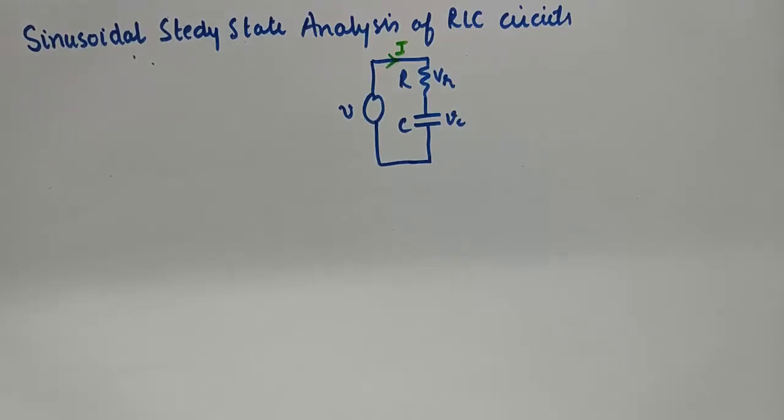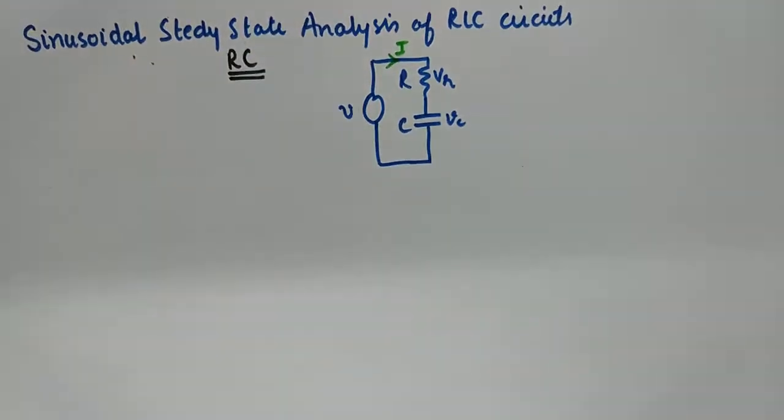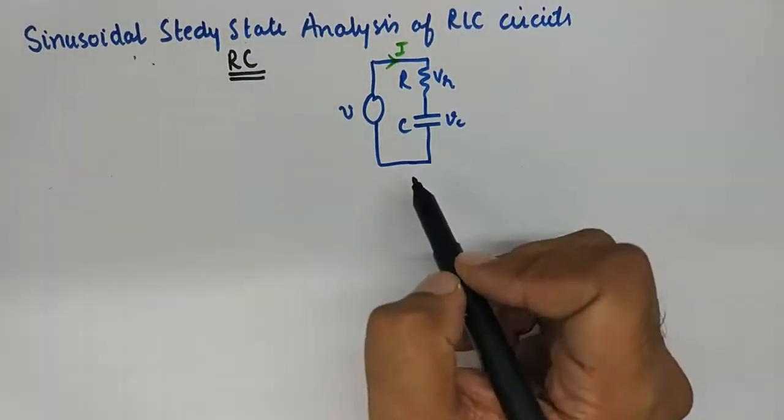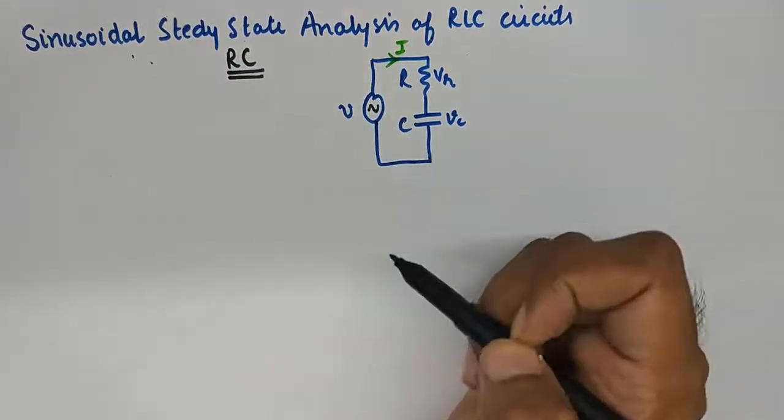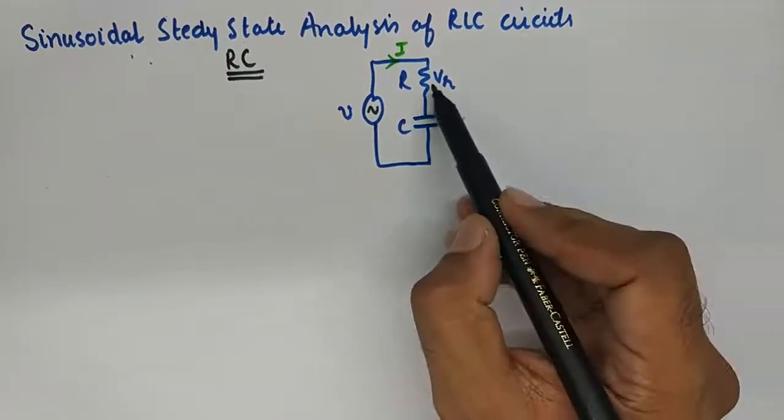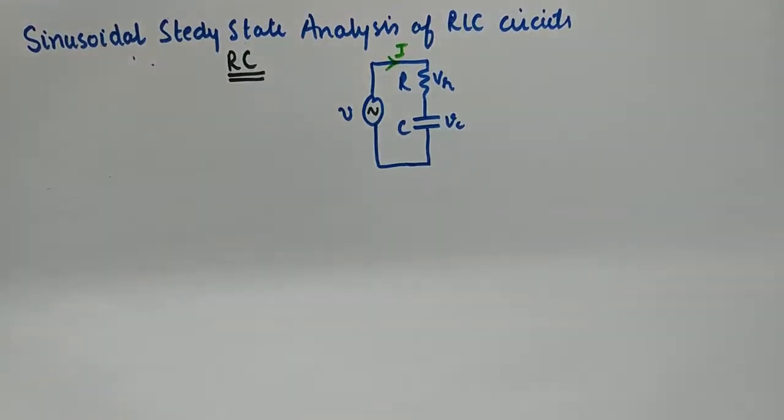First in the series is RC circuits. We'll study the steady state analysis of RC circuits today. And this is how the circuit will look like. We have an alternating voltage source, then we have resistor and capacitor in series to that voltage source.